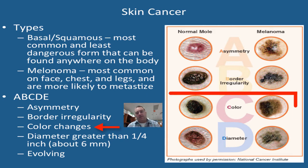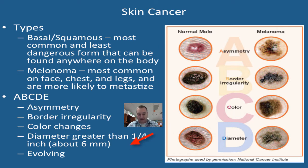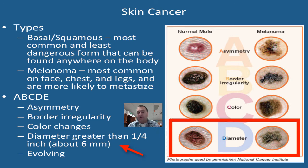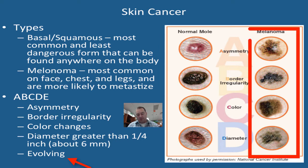D is diameter — if the diameter of the mole is greater than one quarter of an inch, which is approximately six millimeters, that would be a sign it is becoming cancerous and starting to grow. E is evolving — if you see the shape of your mole change, or you see the color change, or you see some changes in general, that would be a signal that this mole or skin feature is becoming cancerous.